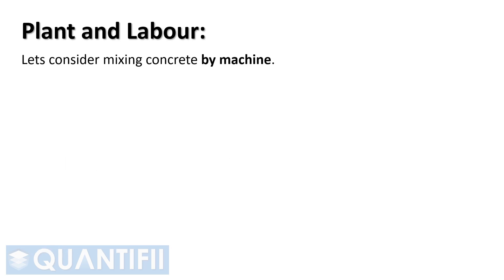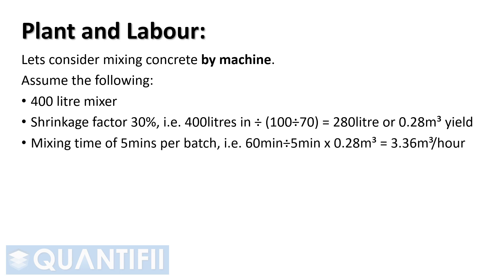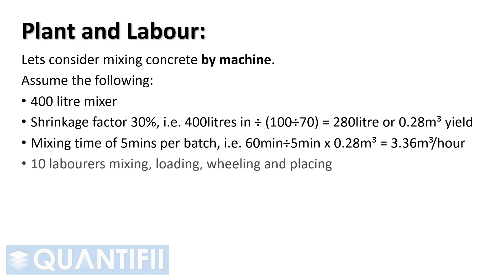Let's consider mixing concrete by machine. Assume the following: 400 liter mixer, shrinkage factor 30%, that is 400 liters in divided by (100 divided by 70), equal 280 liters, or 0.28 cubic meters yield. Mixing time of 5 minutes per batch, that is 60 minutes divided by 5 minutes, multiplied by 0.28 cubic meters, which equals 3.36 cubic meters per hour.